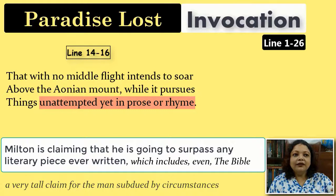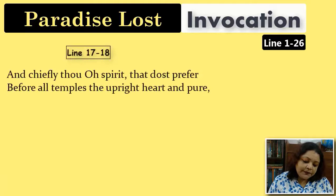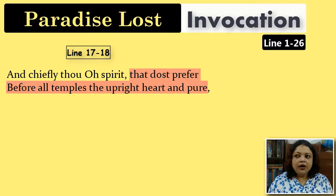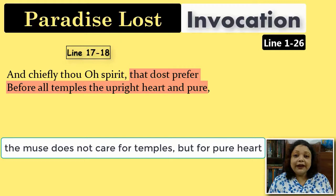'And chiefly thou, O spirit that dost prefer before all temples the upright, hard and pure.' Milton further qualifies his muse. His muse is not just the Christian God of the Puritans and Catholics — it is specifically the God who responds to the Puritan spirit of Milton, who does not care for temples, architecture, or rituals, things which matter to the Catholics. He is narrowing the focus down to this single agent of inspiration: a Puritan God.